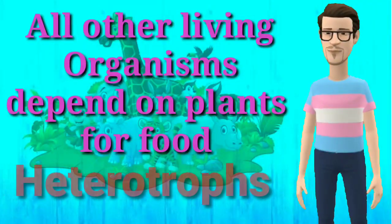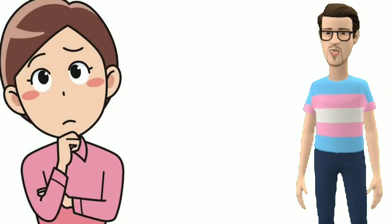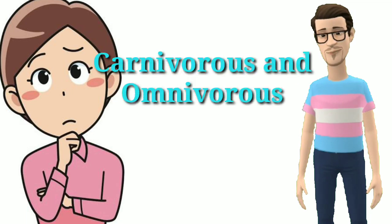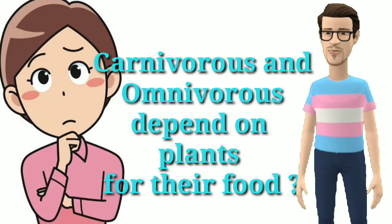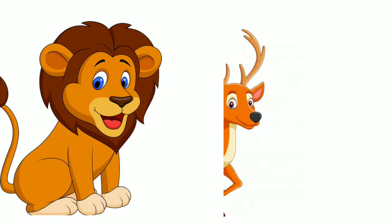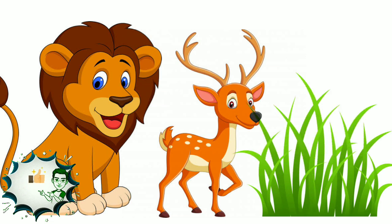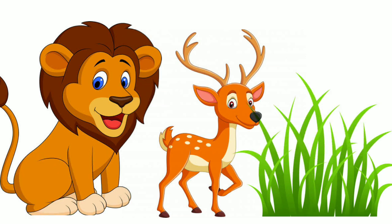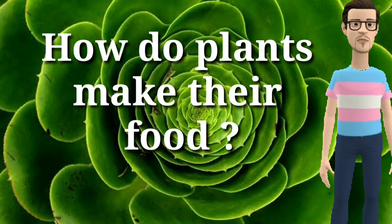All other living organisms depend on plants for their food, that is why they are called heterotrophs. Now, even the carnivorous and omnivorous animals depend on plants for their food. Take the example of a lion, a carnivore, which depends on the deer, a herbivore. The deer in turn depends on the grass or plants. So in turn, even carnivores and omnivores depend on plants. Now let's see how plants make their food.